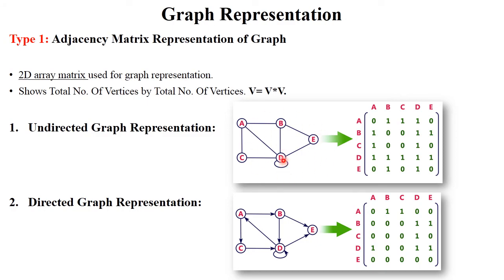For the undirected graph, this is the graph and the matrix is its backend where all values are stored. There are five vertices A to E forming rows and columns. A to B, A to D and A to C — so B, C and D have value 1. Value 0 indicates no path between vertices; value 1 indicates a path exists. A to A has no path so it is 0. A to B is 1, A to D is 1, A to C is 1. A to E has no direct path so it is 0.